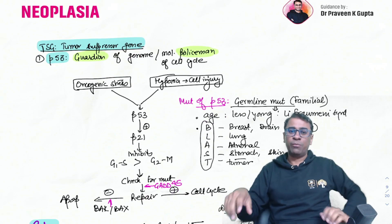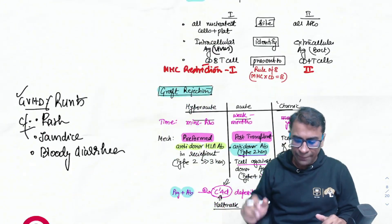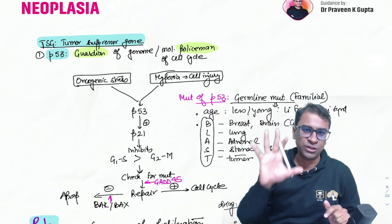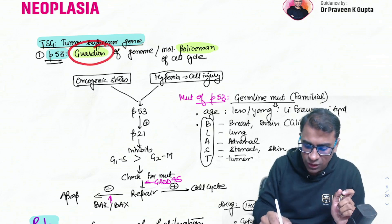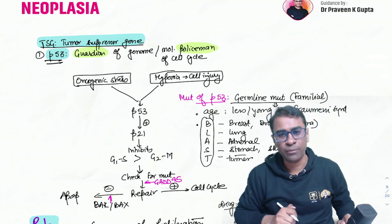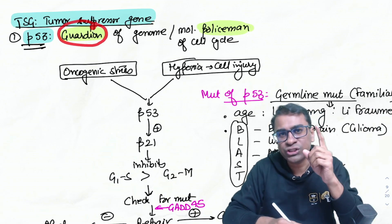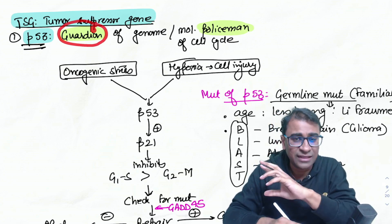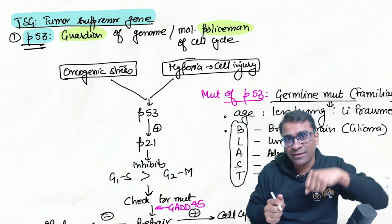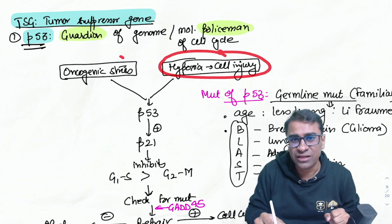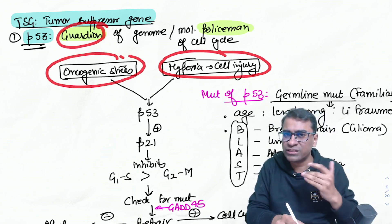Moving to neoplasia — two very important tumor suppressor genes: P53 and the retinoblastoma gene. P53 is called the guardian or molecular policeman of the cell cycle. Think of it as a guardian: whenever there is cell injury or oncogene activation, P53 responds.